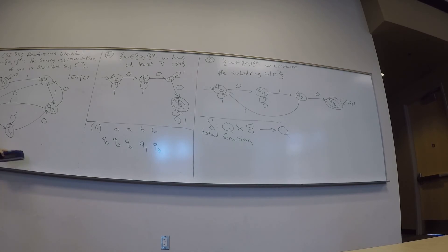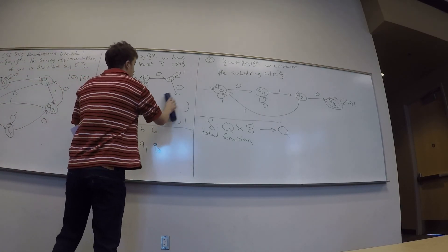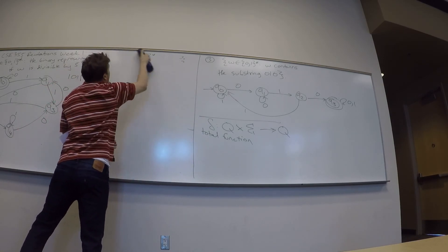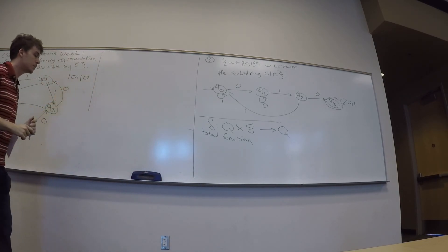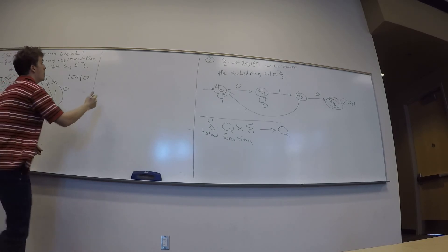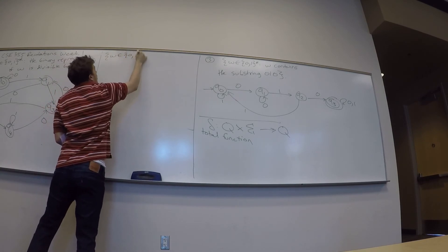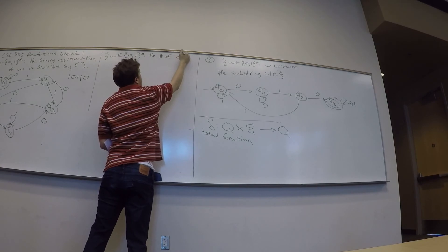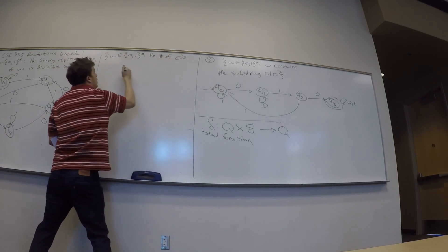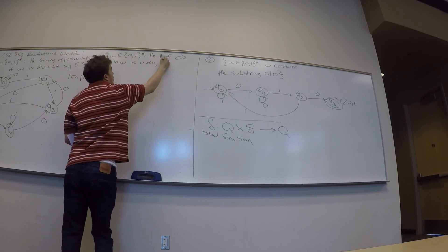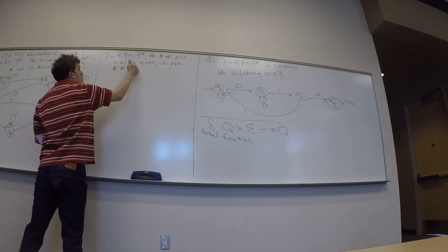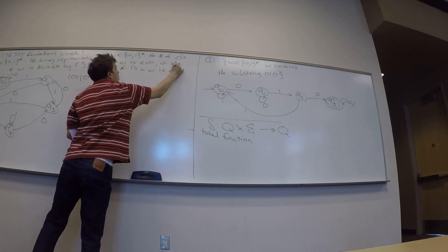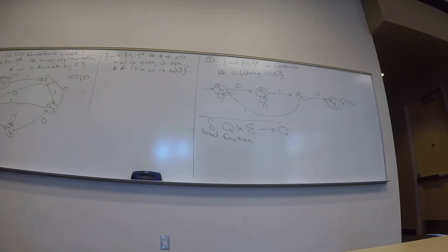Let me do another example since you want more practice — you'll want more examples later on anyway. The language: all strings such that the number of zeros in the string is even, and the number of ones in the string is odd.